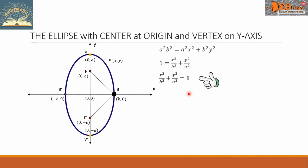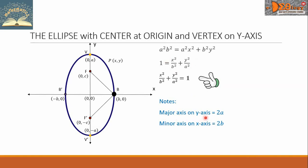This is now the equation of the ellipse with center at origin and vertex on the y-axis. Take note that the major axis is on the y-axis and is equal to 2a. Also, the minor axis is on the x-axis and the value is equal to 2b.